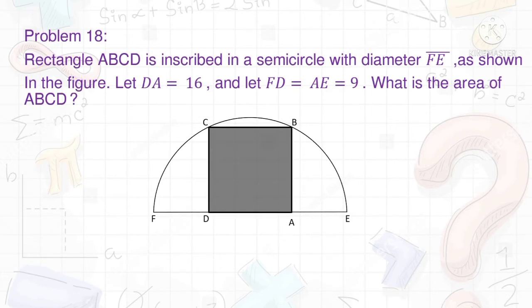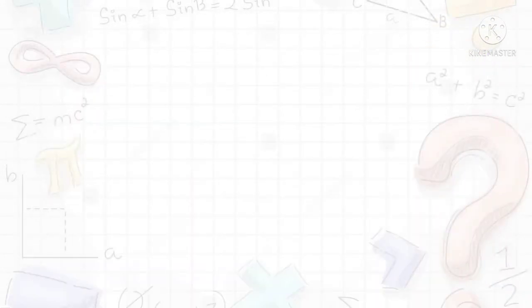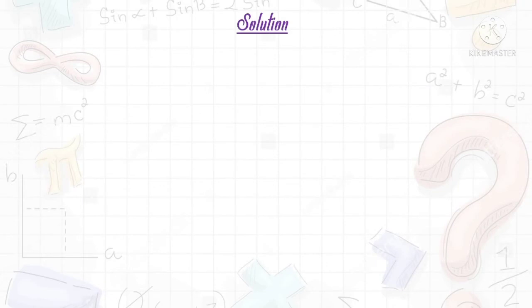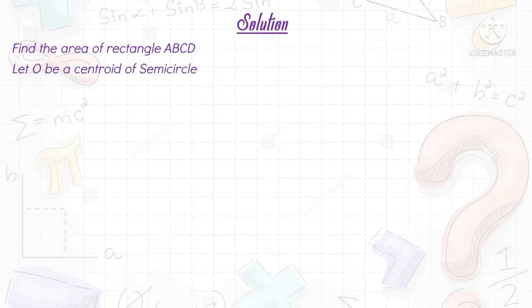Now let's see the solution to this problem together. It's easy to find the area of rectangle ABCD. Solution: Find the area of rectangle ABCD. Let O be the center of the semicircle.